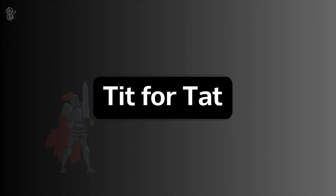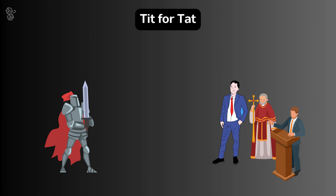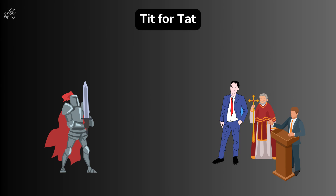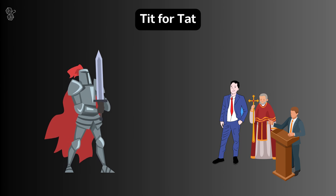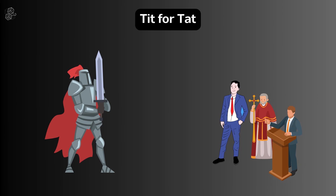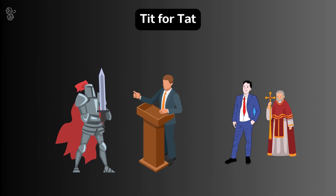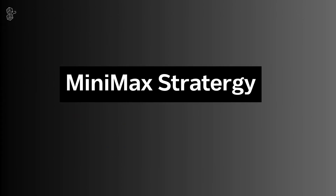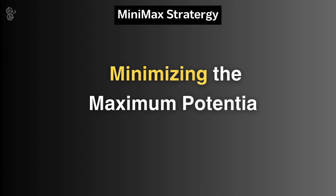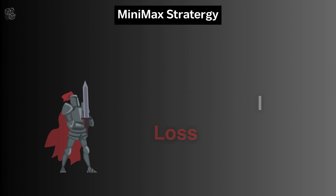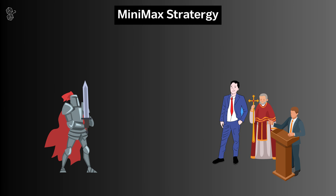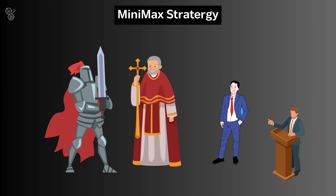First, the tit-for-tat strategy. This strategy starts with cooperation and then mirrors the opponent's previous move. Imagine the sellsword initially cooperating with one powerful figure — in this case, the president — expecting the same in return. Next, the minimax strategy: this is all about minimizing the maximum potential loss. In power dynamics, the sellsword might choose the option that poses the least risk to himself, focusing on self-preservation in a high-stakes environment.